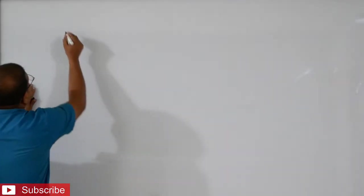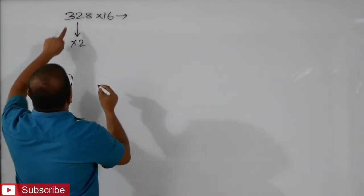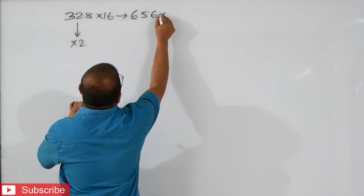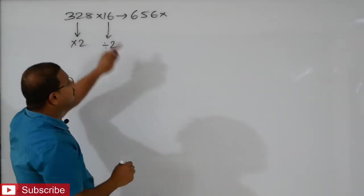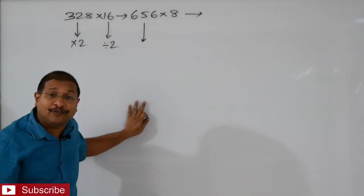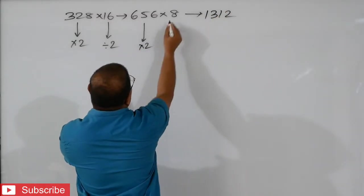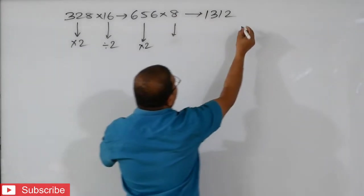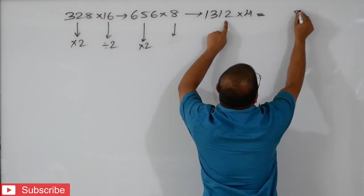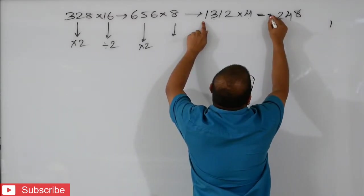Let us see now 328 into 16. First number I am doubling: 328 into 2 means what you will get? 656. Now 16, I will take half: 16 half means 8. It may not be easy for us, so again: 656 into 2, that means 1,312. And we are going to take half of 8, that will be 4. This one we will multiply now: 4 twos are 8, 4 ones are 4, 4 threes are 12 with 1 in hand, 4 ones are 4 plus 1 is 5. So this is our answer: 5,248.